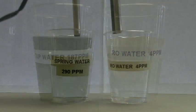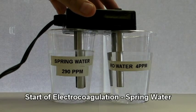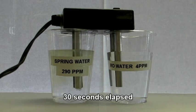There is a slight color change in the reverse osmosis water due to the release of charged particles from the anode of the electrocoagulation device.